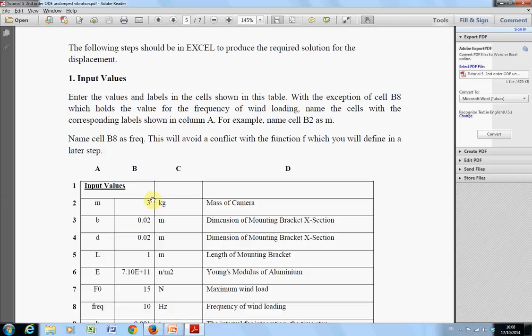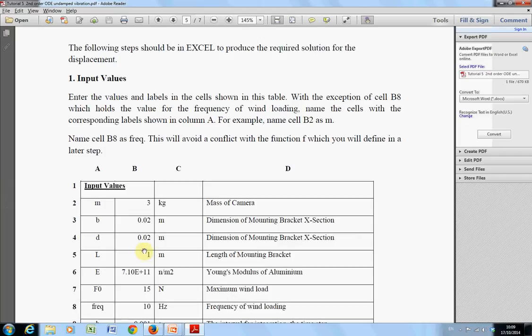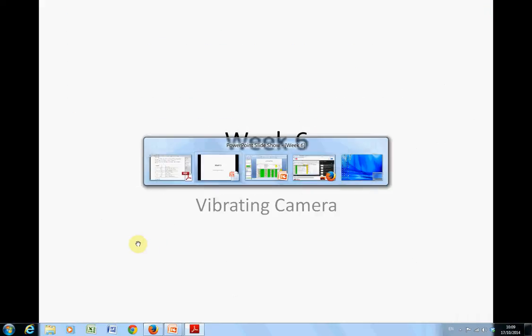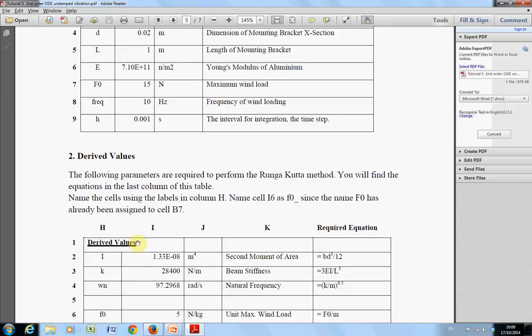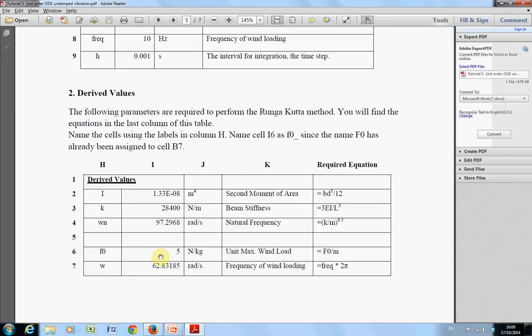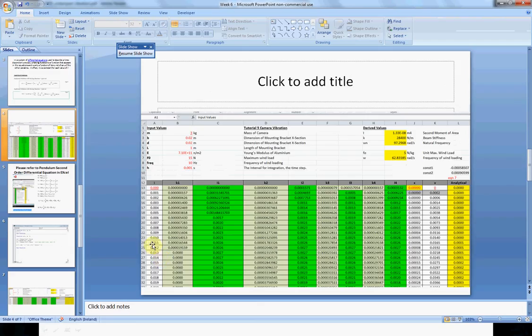So just to remind you here, it says where the mouse is: name the cells with the corresponding label shown in column A. So cell B2, or wherever you are, would be M. Cell B3 would be named as B. Cell B4 would be named as D, etc. Okay, let's go down a little bit. There's derived values there. We'll have a screenshot or two.